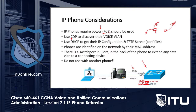Phones use DHCP to get their IP configuration. After the DHCP request and receiving an IP address, the phone looks for its TFTP server. The TFTP server holds the configuration files — specifically the MAC address .cnf.xml file — which tells the phone who its call managers are, what firmware to use, locale settings, language, and all other configuration.